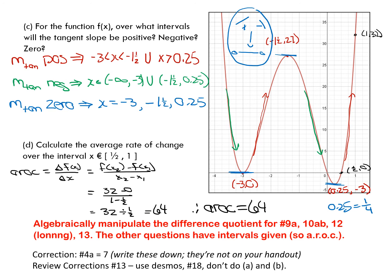There is also another method for calculating rates of change, which is algebraic manipulation — that gives the true instantaneous rate of change without guessing at coordinates or drawing tangent lines. I'd like you to review algebraically manipulating the difference quotient for questions 9a, 10a, 10b, 12, and 13. The other questions have intervals given, so those will be average rate of change calculations. There are also some corrections from your textbook. Don't forget to review chapter 2 if you've forgotten about rates of change.